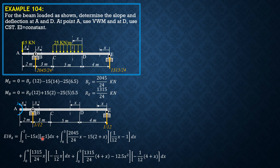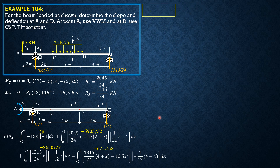Using the calculator, the first integral is 30. After simplifying, the second integral is −5905/32. The third integral is −2630/27, and the fourth integral is −675.752. Combining these values, θ_A can now be found: θ_A equals −927.69 over EI.